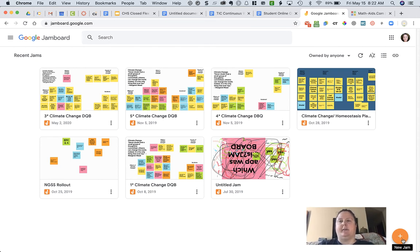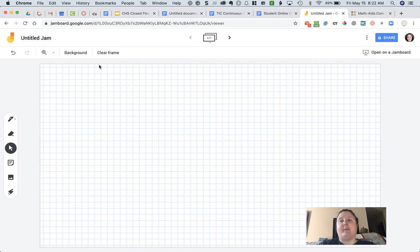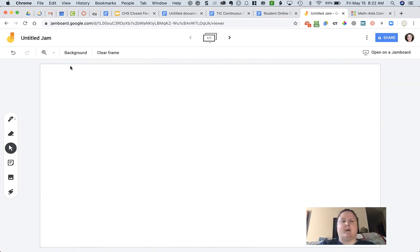Now when it opens you can see that I have this blank white background. You can choose different backgrounds, for example you might want to use graph paper. I'm just going to leave it as the blank white one right now.